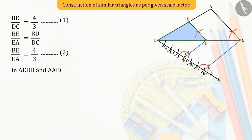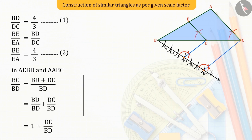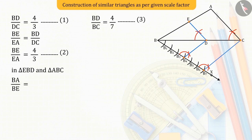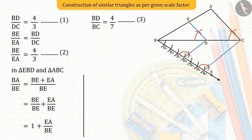In triangle EBD and ABC, we get BD upon BC equals to 4 upon 7. Similarly, we can find the value of BDE upon BA.